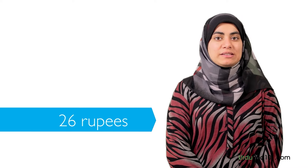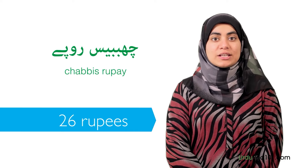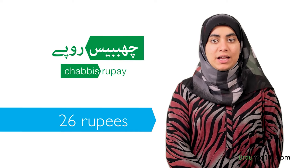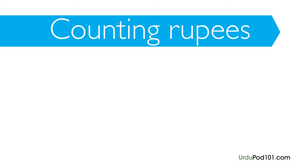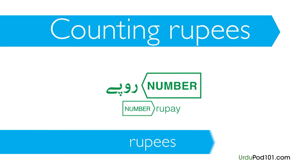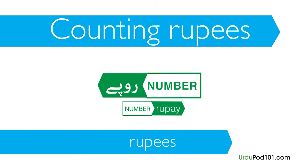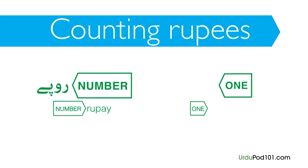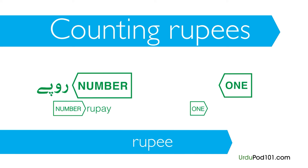Let's try to say prices in Urdu. Start by trying to say 26 rupees: chhabbis rupee. This is really straightforward — first we say the number followed by rupee. There's only one simple catch: for all numbers except one, you use the plural form 'rupees,' which is rupee. For one, you use the singular form rupeeya. So one rupee in Urdu is ek rupeeya.